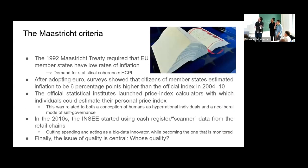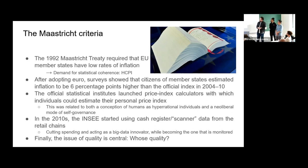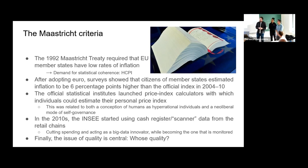The Maastricht criteria made things more complex. Before it, the paper emphasized direct distributional conflicts between employers and wage earners. Afterward, more indirect mechanisms came into play. In the 1990s, the Maastricht Treaty required a statistical inflation estimate covering all member states, leading to the harmonized CPI. Interestingly, when the EU organized household surveys, they found that people estimated the rate of inflation to be around 6 percentage points higher than the official estimate in 2004–2010.